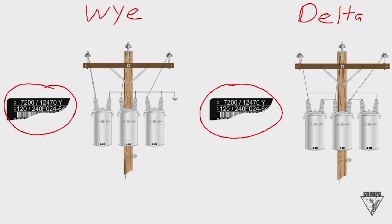The first question is: what's the primary coil voltage rating? It's the smaller number of the two numbers on the high voltage side — 7,200 volts in this example. If you've got two numbers, it's always the smaller number that the primary coil is rated for. If you've got a transformer nameplate with one number, then the primary coil is rated for that one number.